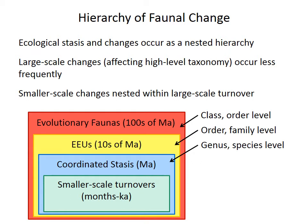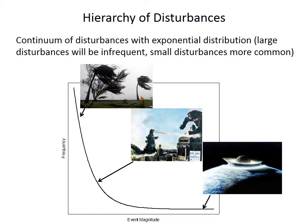All these examples of ecological change are nested as a hierarchy, with large shifts — such as the transition between evolutionary faunas — occurring infrequently and affecting things at very high taxonomic levels, while smaller shifts occur much more frequently. EEUs were on the scale of tens of millions of years and featured changes at the order or family level, whereas coordinated stasis affected only genus and species level and occurred at million-year timescales. This hierarchy of faunal change likely results from a continuum of environmental disturbances — the most severe, like giant meteorite impacts or enormous flood basalt eruptions, are required to eliminate incumbents at high taxonomic levels and occur very rarely, whereas smaller disturbances affecting just a couple of species are more frequent.